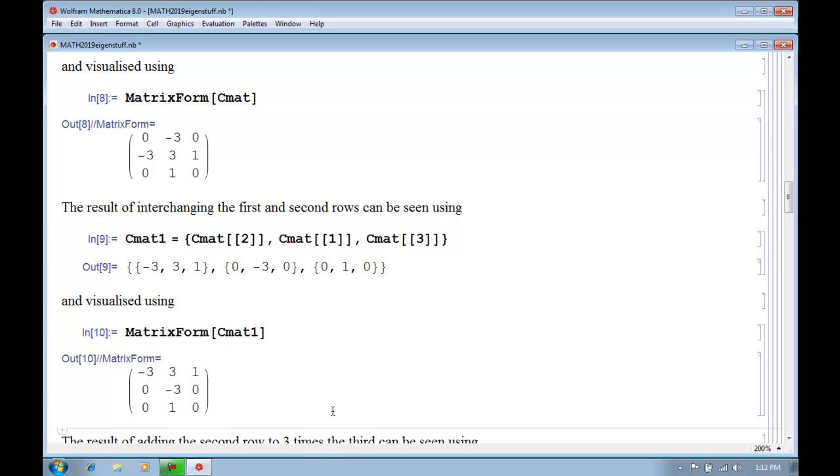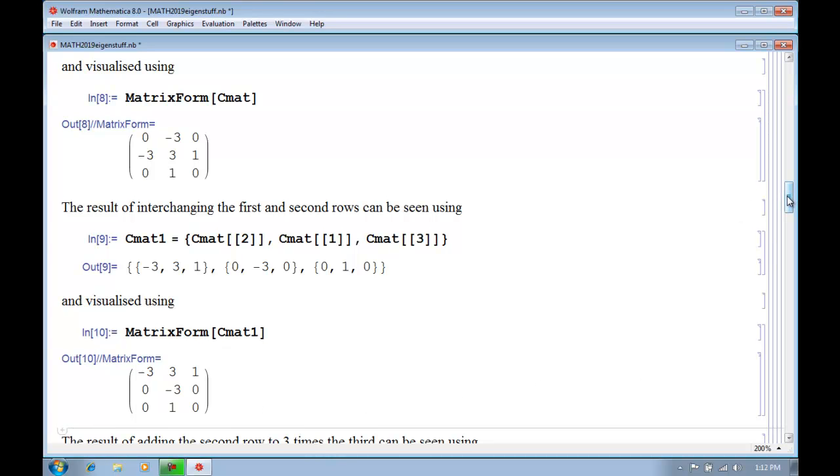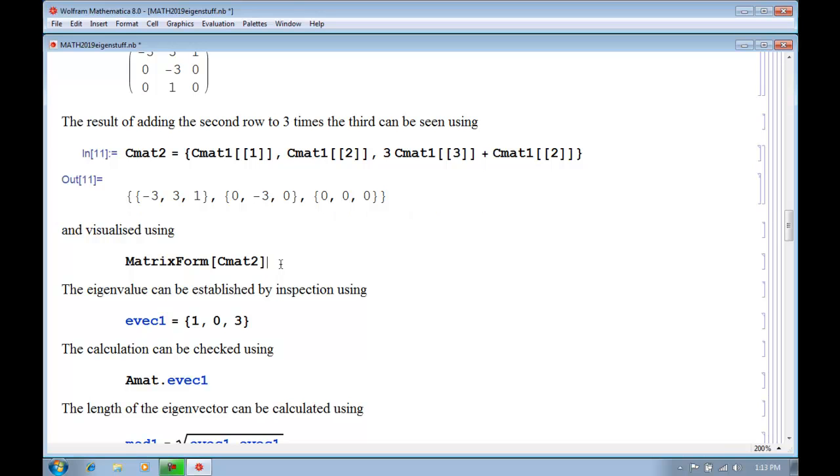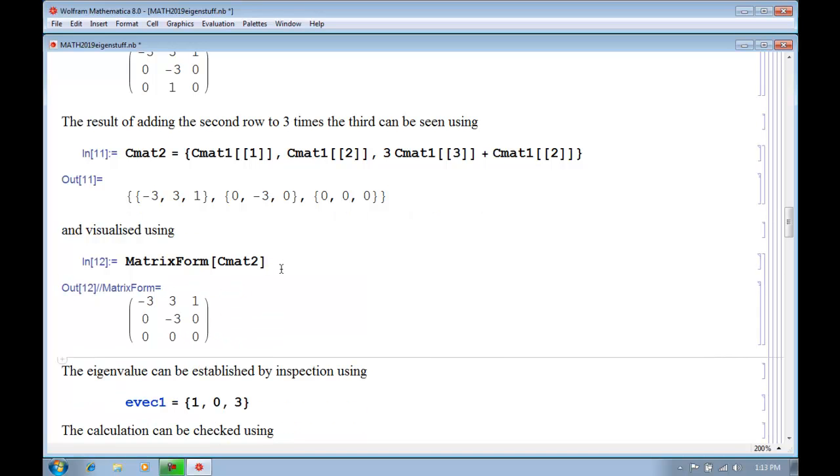And now we can see we've got zeros under the diagonal element in the first column, and now we want to get zeros in the second column. So we can do that by adding the second row to three times the first row, like so, using this. And indeed we see, we'll visualize it as a matrix.